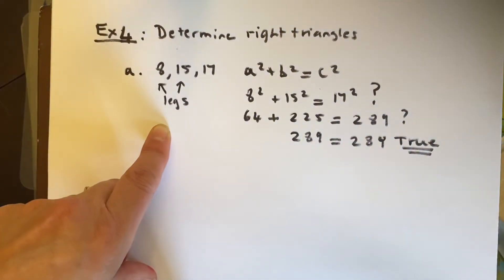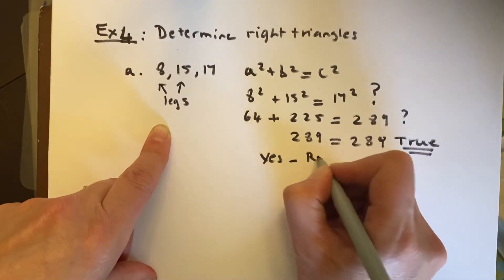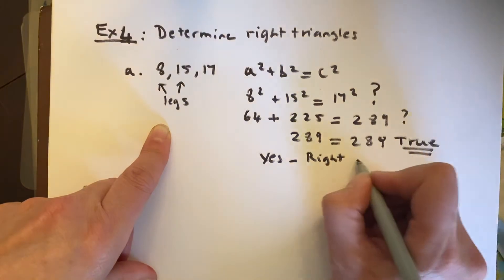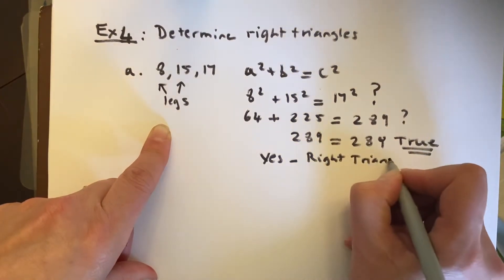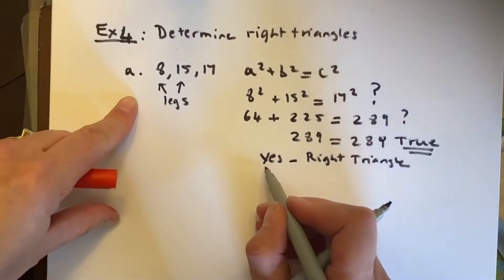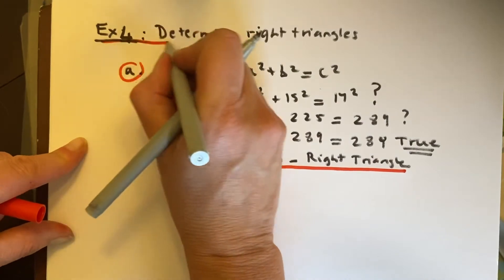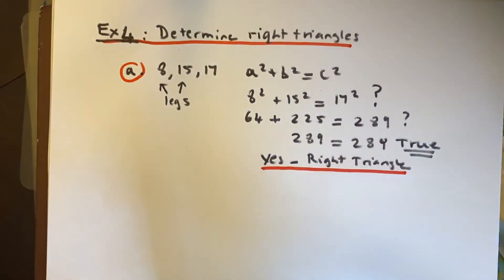And therefore, yes, it's a right triangle. So these legs, these three lengths, give us a right triangle.